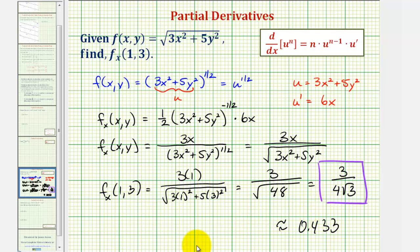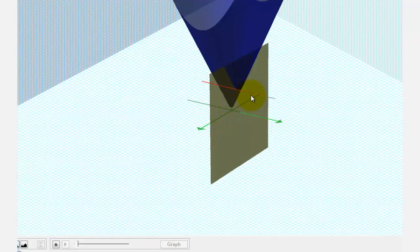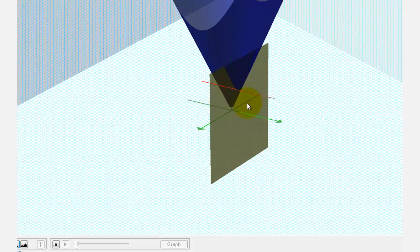So going back to our 3D graph for a moment, we just found the slope of this red tangent line in the x direction.